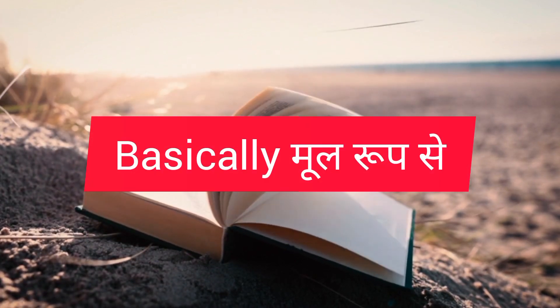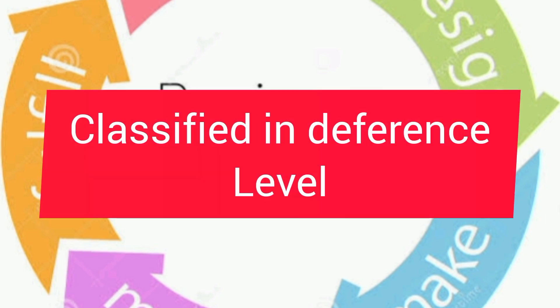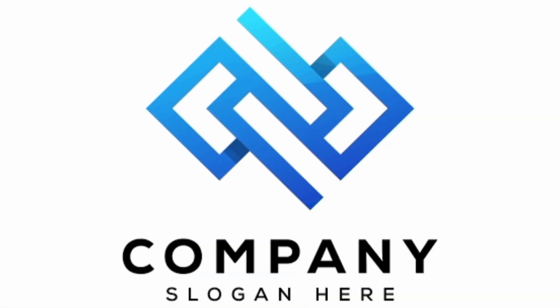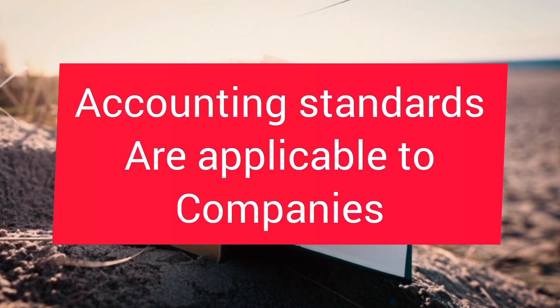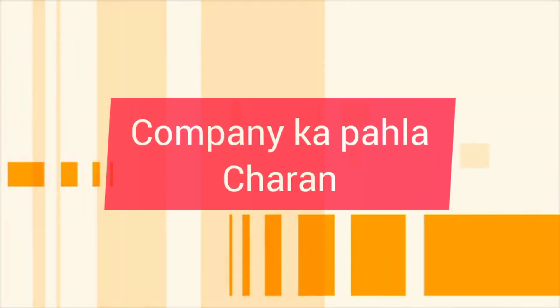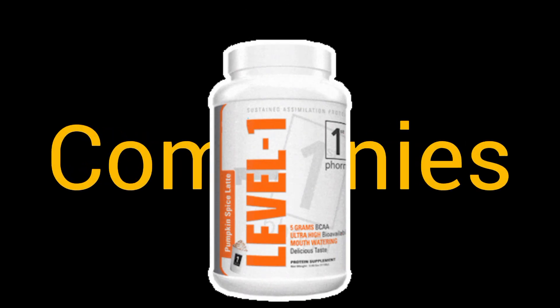Basically, enterprises are classified at different levels. But according to Companies, they are decided into Level 1st, 2nd, and 3rd category. Accounting Standards are applicable to companies. So let's talk about the first one — Level 1st companies.